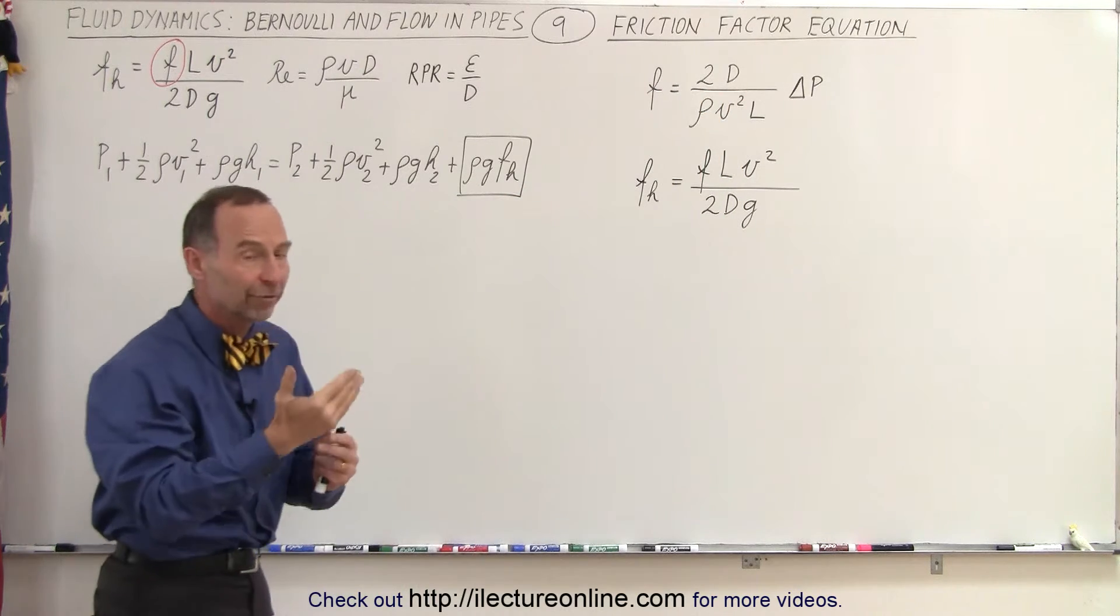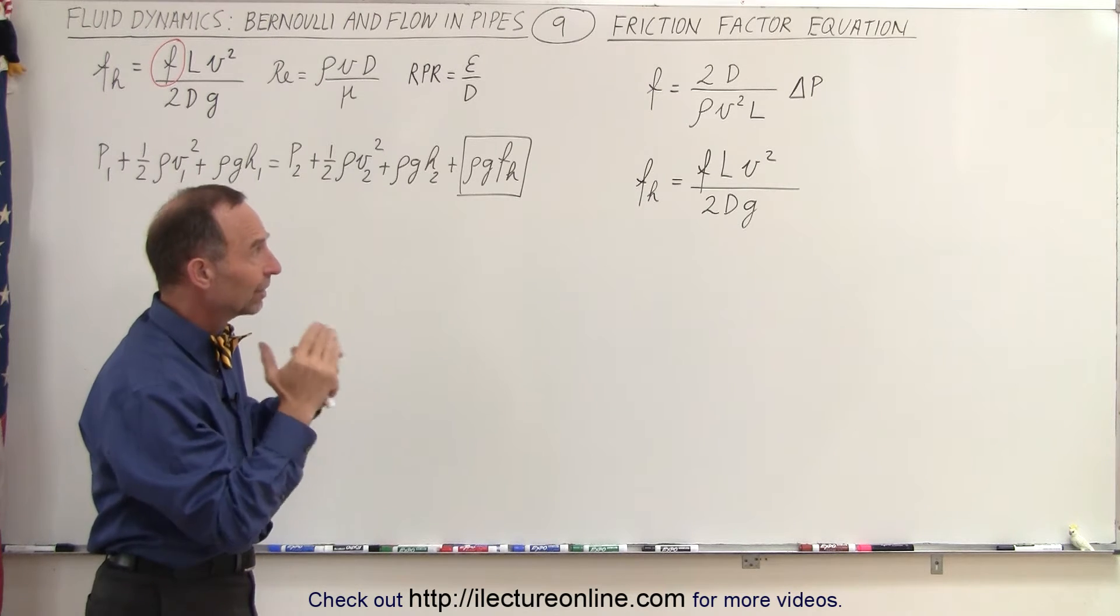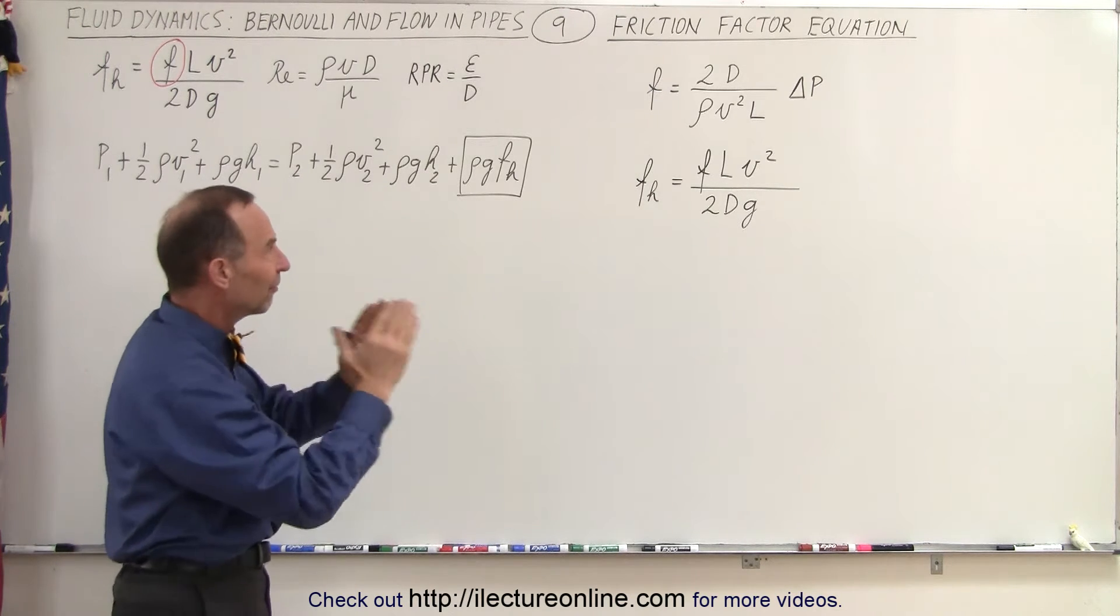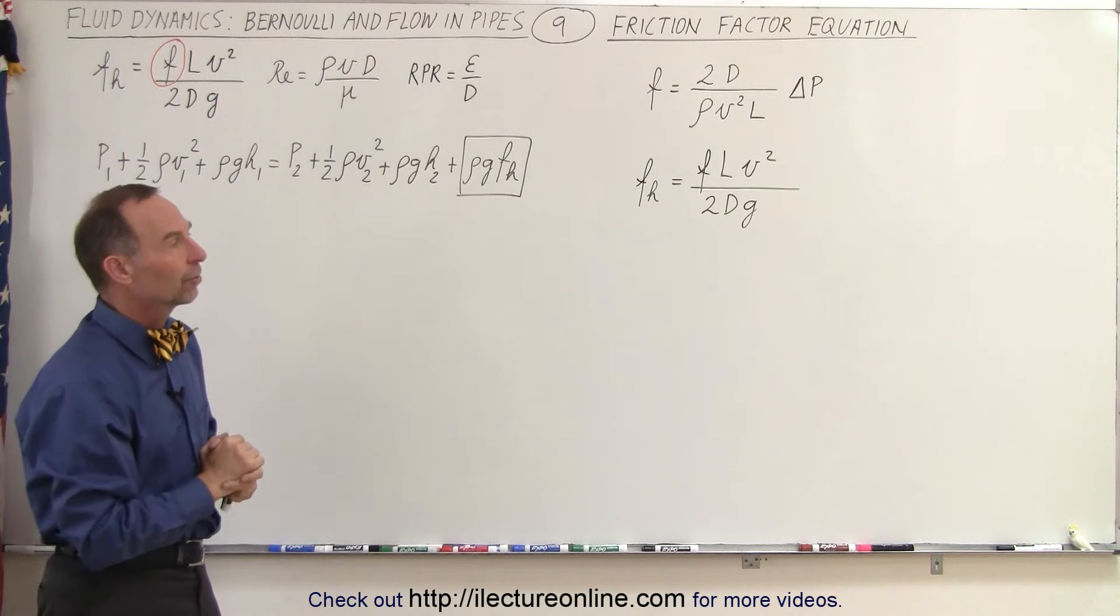Twice the diameter of the pipe divided by the density of the fluid, the velocity squared of the fluid, and the length of the pipe times the difference in the pressure caused by this additional frictional head loss.